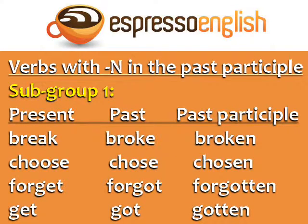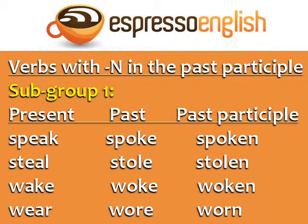Subgroup one: Break — broke — broken. Choose — chose — chosen. Forget — forgot — forgotten. Get — got — gotten. Speak — spoke — spoken. Steal — stole — stolen. Wake — woke — woken. Wear — wore — worn. In this subgroup, the vowel changes to O in the past and past participle.